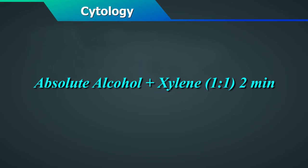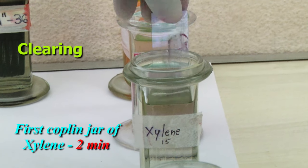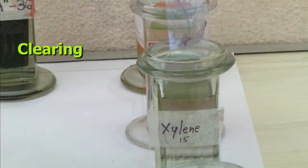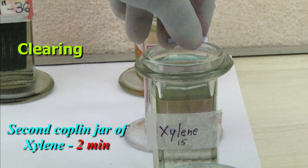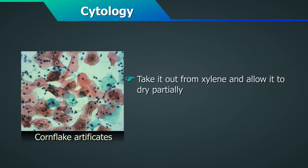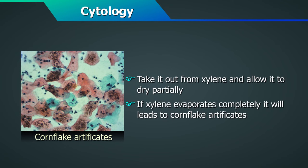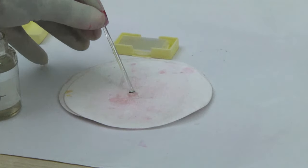Clearing in 3 stages: absolute alcohol plus xylene in a proportion of 1:1 for 2 minutes; dip in the first Coplin jar of xylene for 2 minutes, then again in the second Coplin jar of xylene for 2 minutes. If the xylene evaporates completely, it will lead to what we call a corn flake artifact. So allow the slide to dry partially after taking it out from the xylene. Mount in DPX.